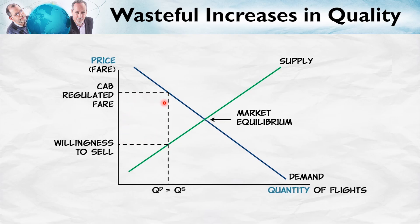Very profitable industry because the price was kept well above the cost. But each airline really wanted more customers, and this was the genesis of the undoing of the plan, because each airline was trying to compete to get more of these profitable customers. But they couldn't compete by lowering the price. So, how do you get more customers if you can't compete by lowering the price?